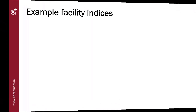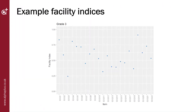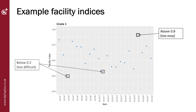Facility indices can be presented visually for multiple items, as in the graph shown. This shows the variation in facility values across the assessment and allows you to easily spot those items which are too easy — unless they are a settling question at the start — and too difficult. Whilst this doesn't tell you why they were too hard or too easy, it does tell you which items you should look at to understand why they might have performed this way.